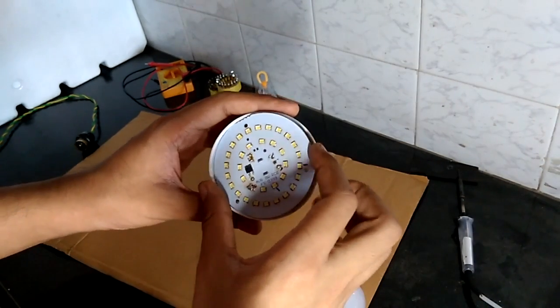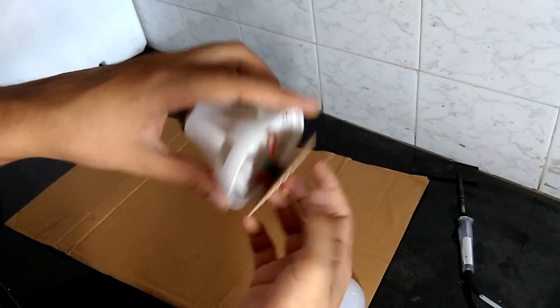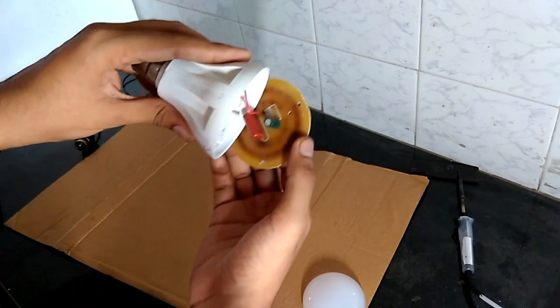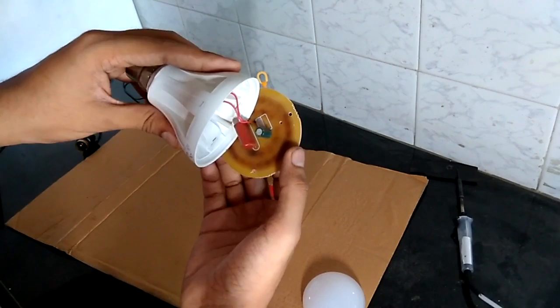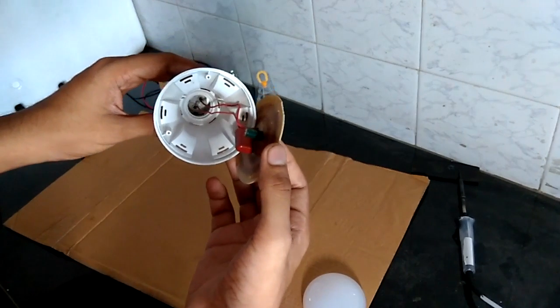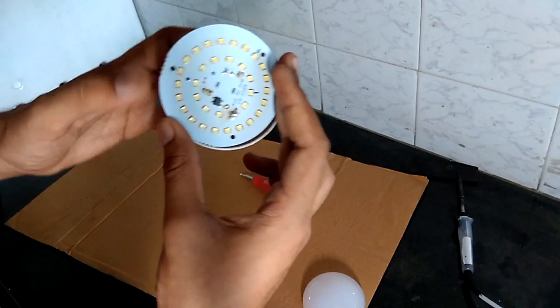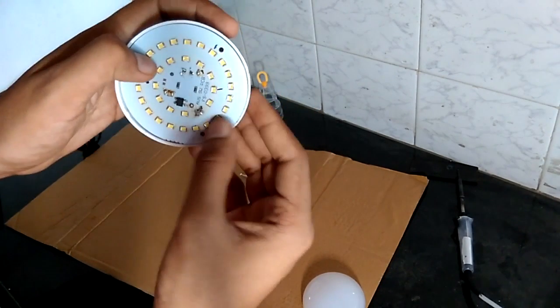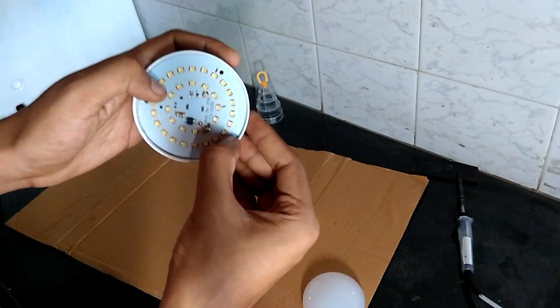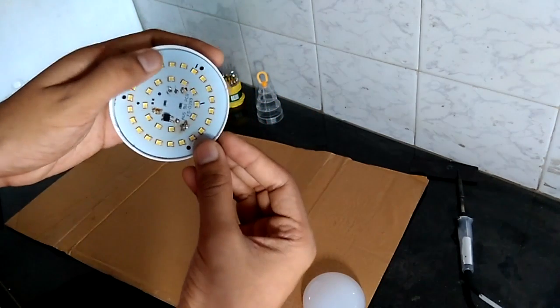Usually whenever you open any device, you have to look for any burnt or broken parts. Here I have got nothing burnt or anything broken. On the back side we have got a few capacitors. So if nothing is burnt, then you have to check your LEDs. I am going to check it using my multimeter.